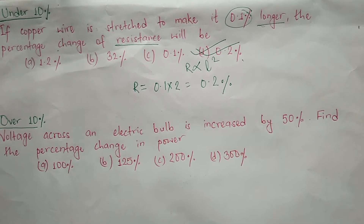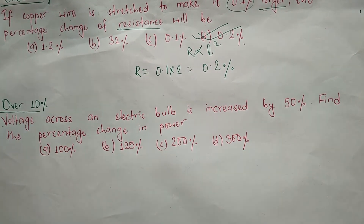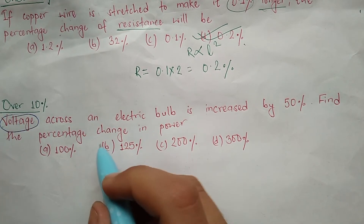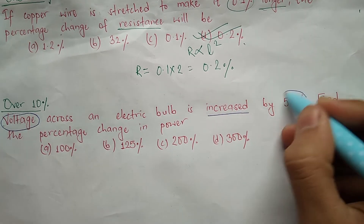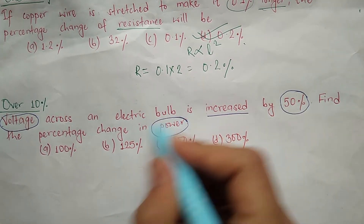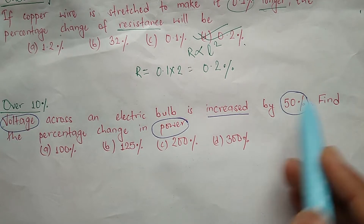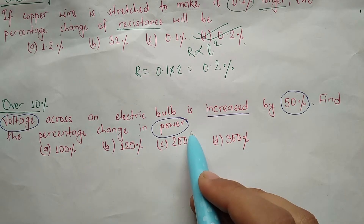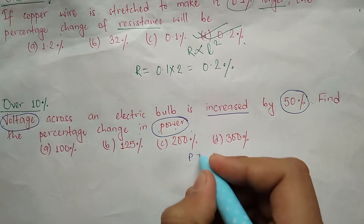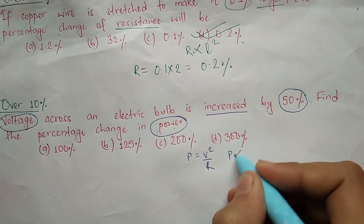Now for the over 10% example: voltage is increased by 50%. Find the percentage change in power. First, we find the relation between voltage and power. We know P = V²/R, so P is directly proportional to V².